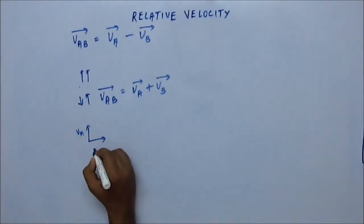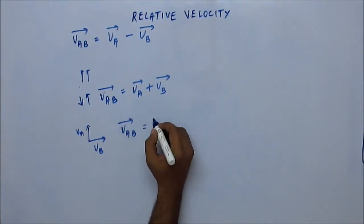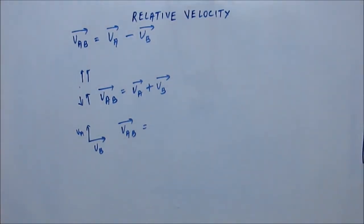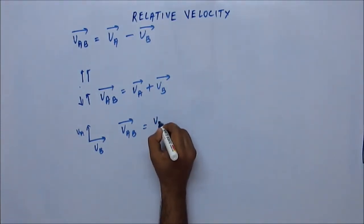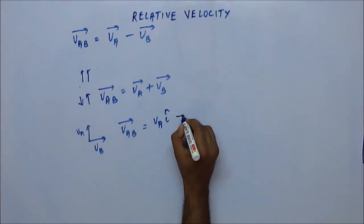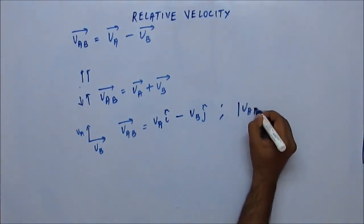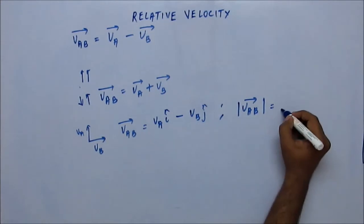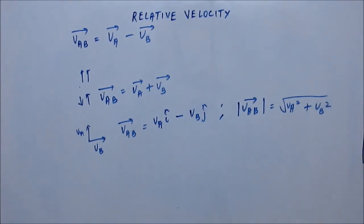If the velocities are perpendicular to each other — suppose this is velocity of A and this is velocity of B — then velocity of A with respect to B (vector) equals velocity of A (vector) minus velocity of B (vector). If you take one axis as Y, you would write VA î-cap and VB ĵ-cap. The magnitude of the relative velocity vector would then be equal to √(VA² + VB²). This we have seen before.